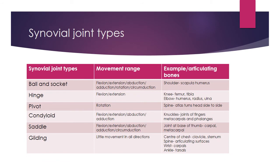Synovial joint types. You should be aware of a few of these: ball and socket, hinge joint, pivot joint, condyloid, saddle and gliding. Looking across to the right, you can see the different types of movement ranges available and an example of the articulating bones. Make yourself aware of which bones are involved, the types of movements which can happen around those joints, and the locations of where these joints are — that will increase your chances of success.